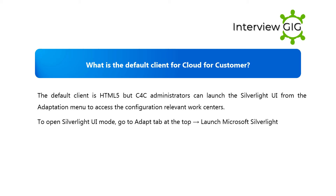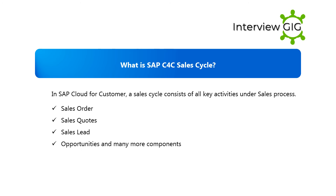What is the default client for Cloud for Customer? The default client is HTML5, but C4C administrators can launch the Silverlight UI from the adaptation menu to access the configuration-relevant work centers. To open Silverlight UI mode, go to the Adapt tab at the top and launch Microsoft Silverlight.